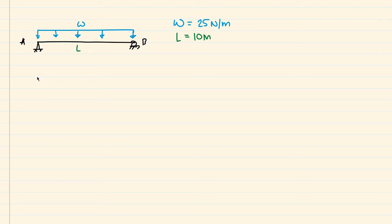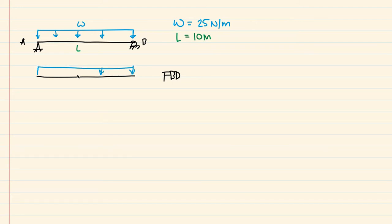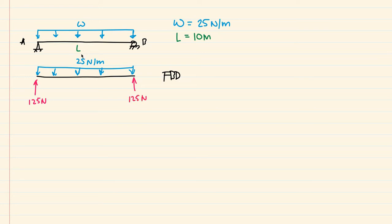When we start a shear and moment diagram problem, we want to first draw our free body diagram. We have this W load, this uniformly distributed load — 25 newton per meter over a span of 10 meters — and then we're going to have our reactions at A and B. They are going to be 125 newtons each, because we take 25 newton per meter times the length, which gives 250 newtons, divided by 2 since this is a simple span with uniform distribution.